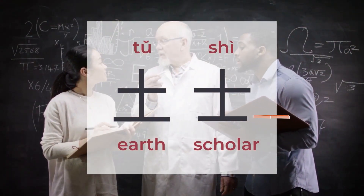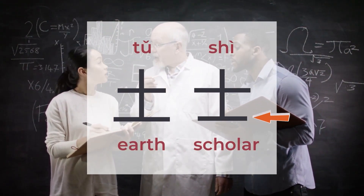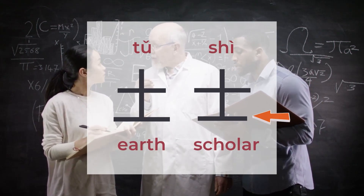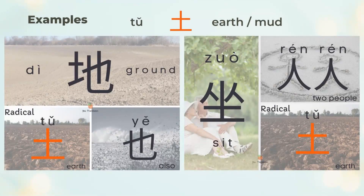If the bottom horizontal line is shorter than the first, it's another character called 士, meaning a scholar. 土 mainly shows on the left or bottom part of characters. 地 means ground, and ground relates to mud. 地 is left 土 (earth) and the right 也.